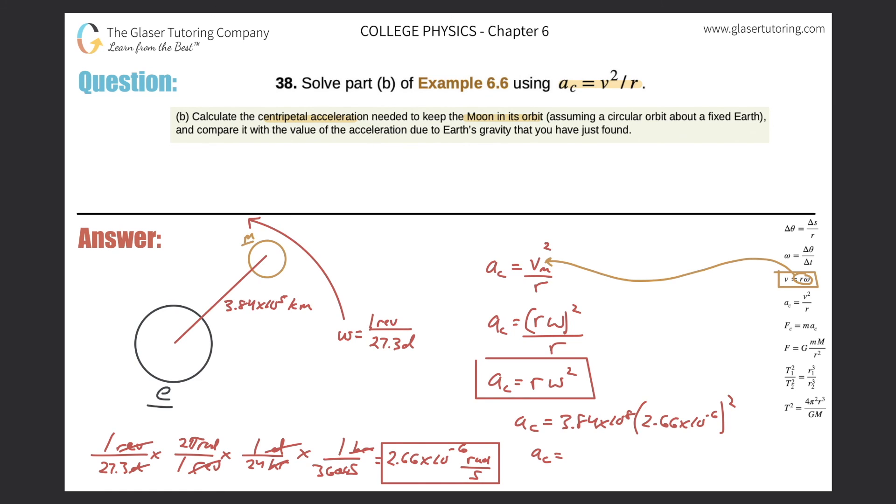So we get 3.84 times 10 to the eighth multiplied by 2.66 times 10 to the minus 6 squared. And we get 2.72 times 10 raised to the minus 3. And that is in meters per second squared. And that is the answer to this question.